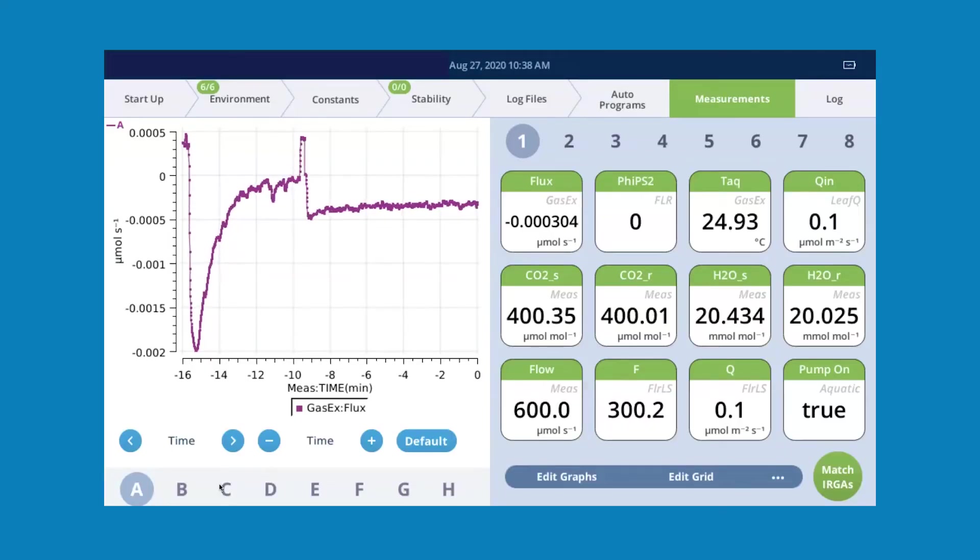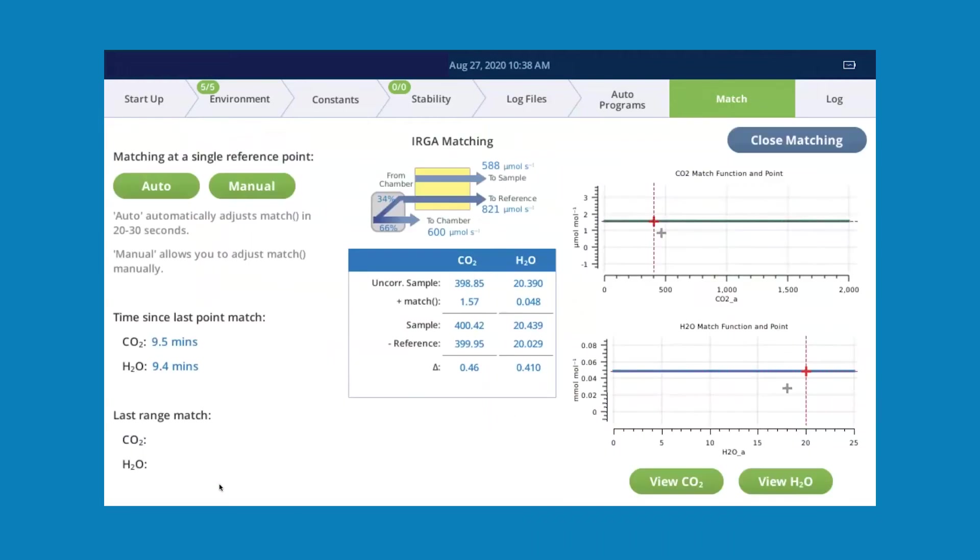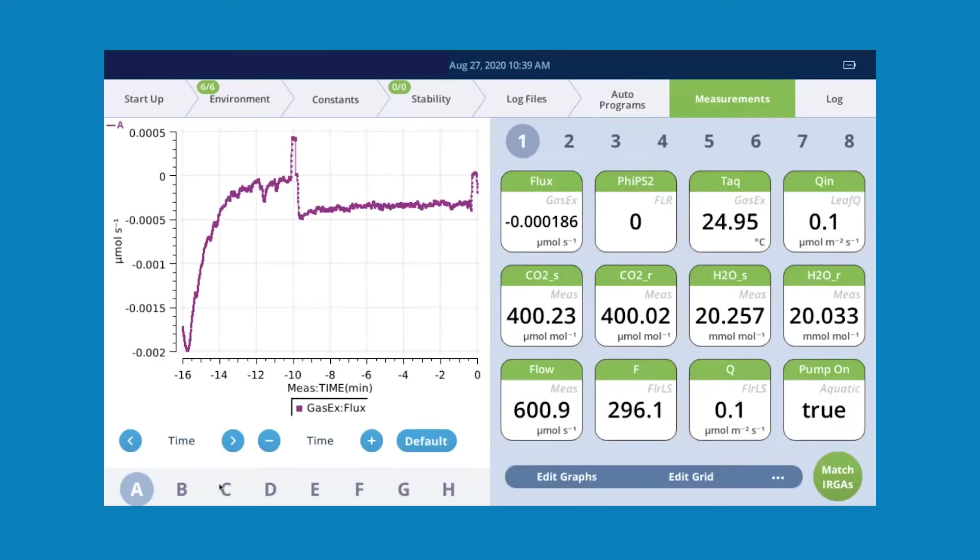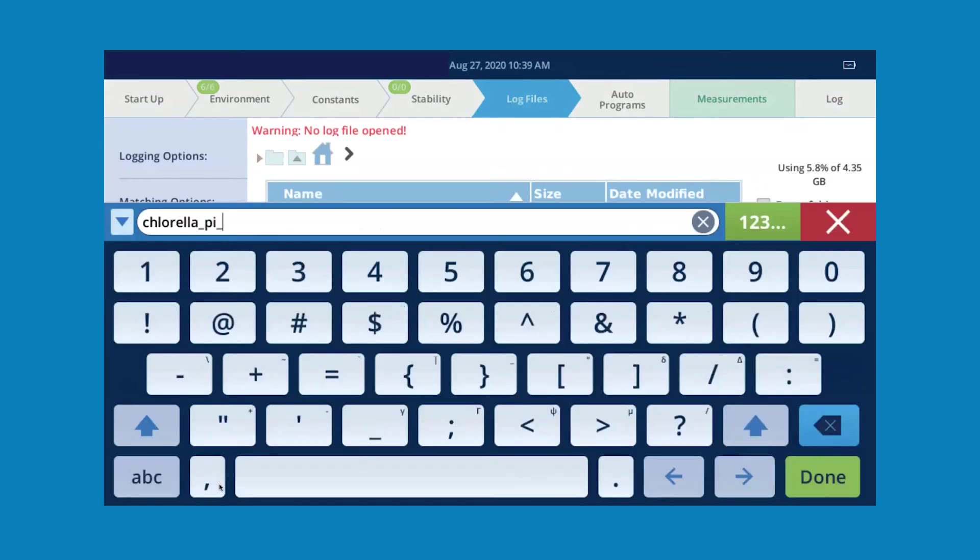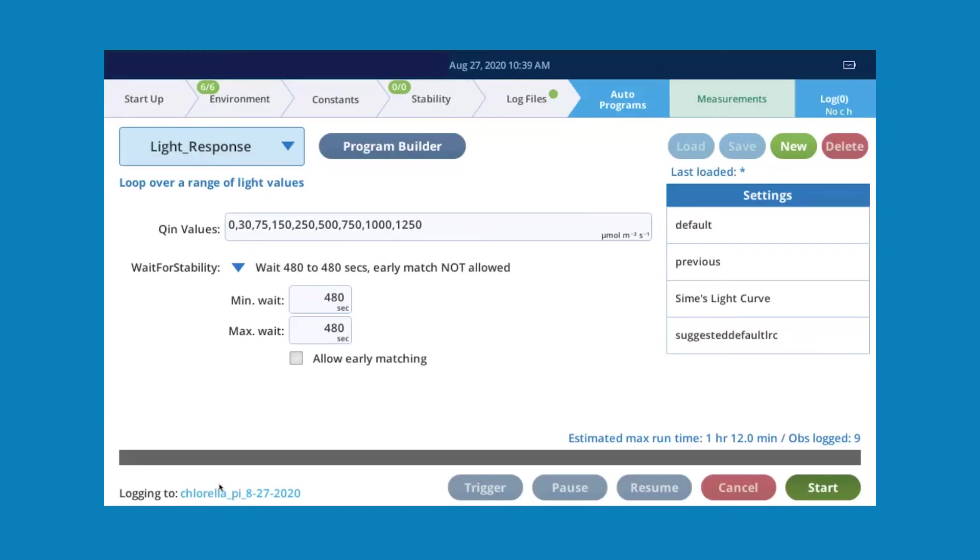On the instrument I've already set up an environment where I'm controlling the air entering the sample at 400 ppm, the same as what I equilibrated my media to. And we're going to open a log file and then we're going to use a pre-built script on the instrument to do the photosynthesis irradiance curve under instrument automation. So I'm going to hit start here. We'll come back and look at data at the end.